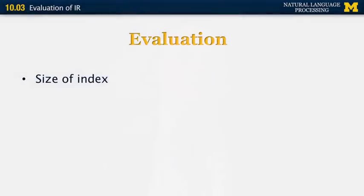The next segment on information retrieval deals with evaluation of information retrieval systems. It's very important to evaluate search engines because it's very difficult to compare them purely based on anecdotal evidence. Some of the metrics used to evaluate information retrieval systems include the size of the index, so large engines like Bing and Google would get a high score on this criterion.